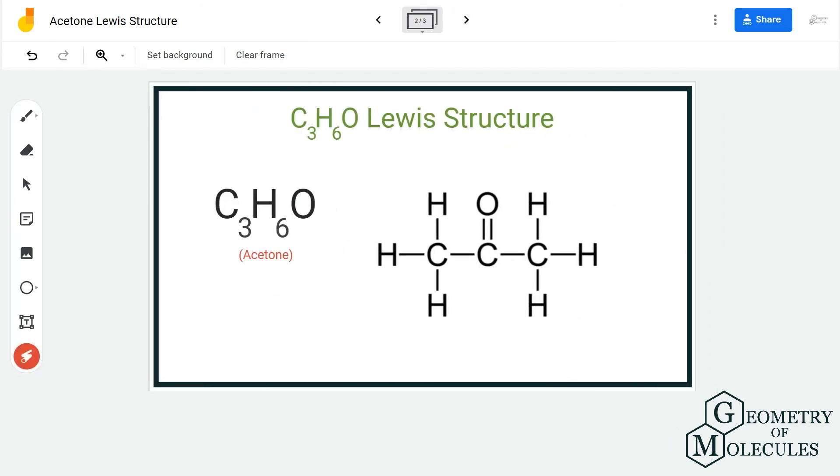Each atom has eight valence electrons in its outer shell except for hydrogen, as it is an exception to the octet rule. We have complete octets for all the atoms, and this is the Lewis structure for acetone.